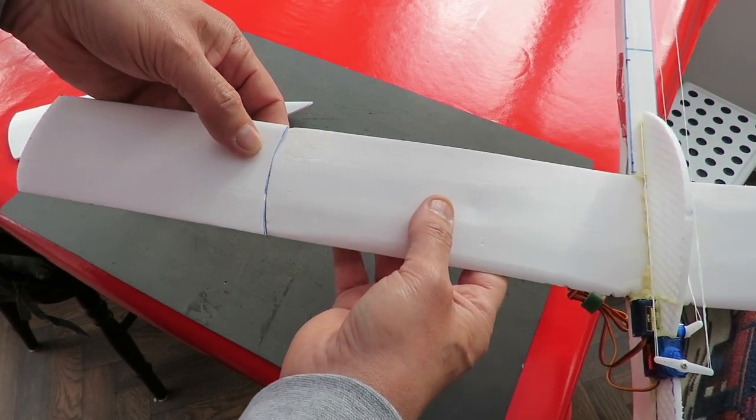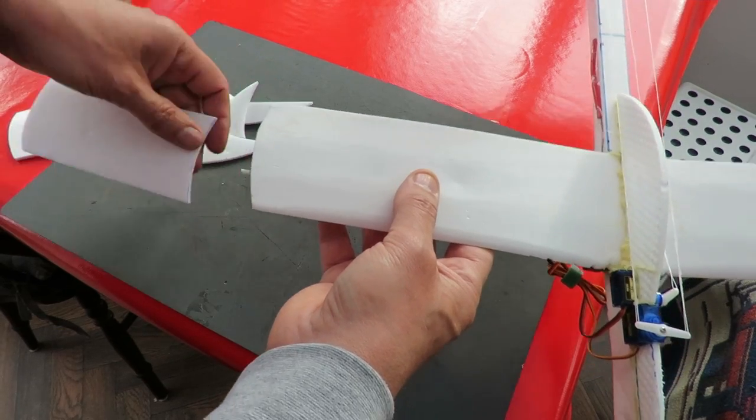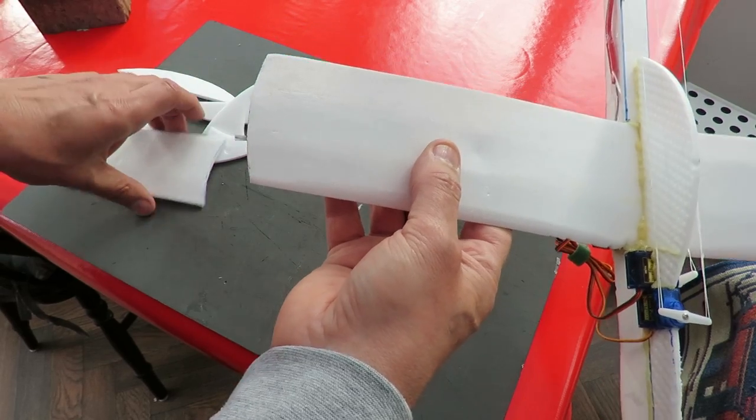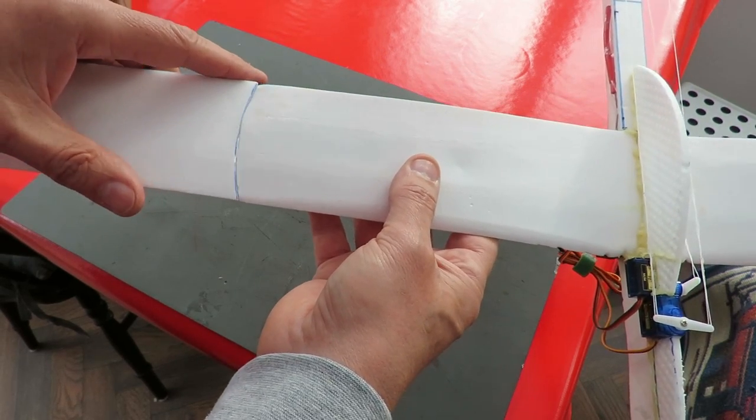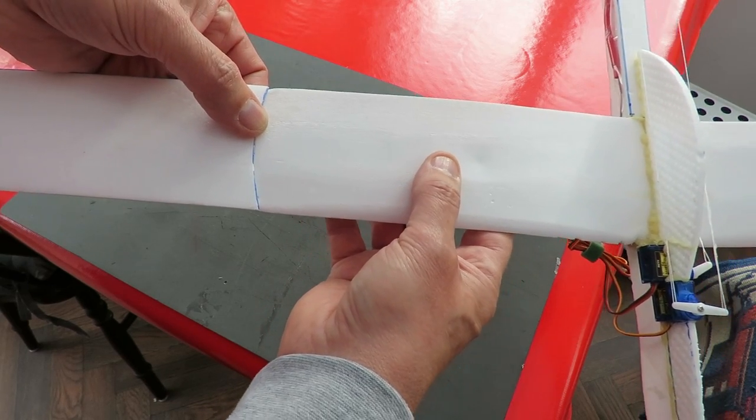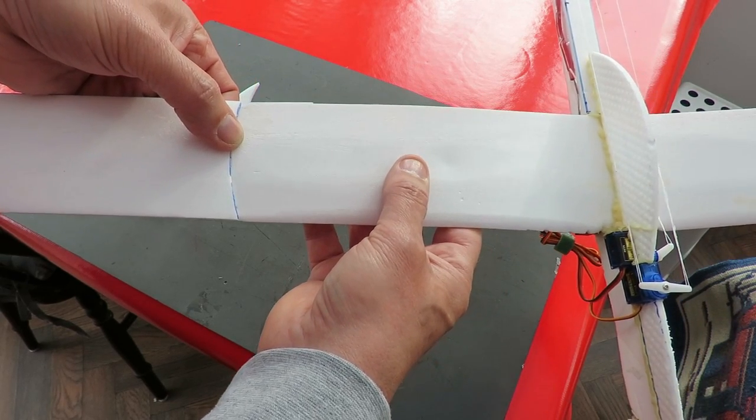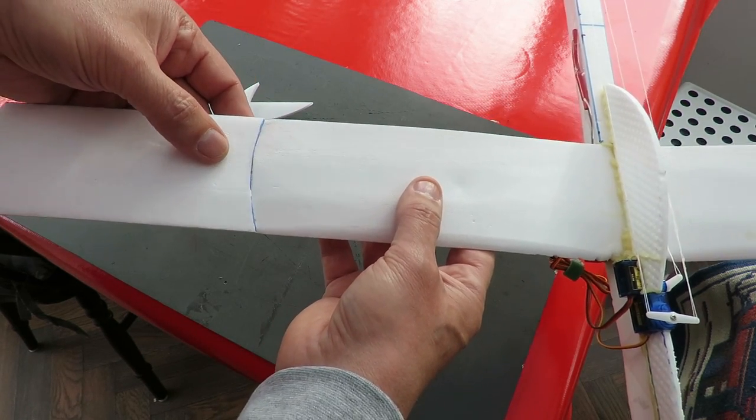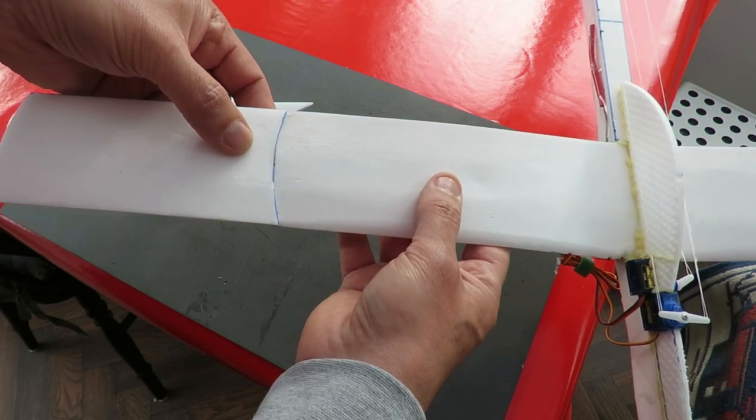I shall just use Gorilla Glue to join them. We've got a tiny little bit of the fiberglass spar sticking out, so that will just give us a little bit of strength on the end. Probably not enough because I'm launching this discus style, so there's quite a bit of strain on these wingtips, but we'll give it a go and see if it lasts.